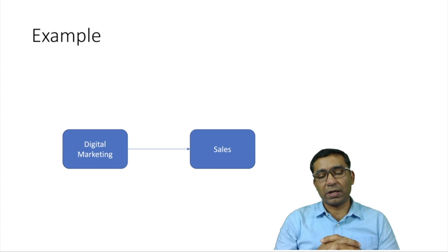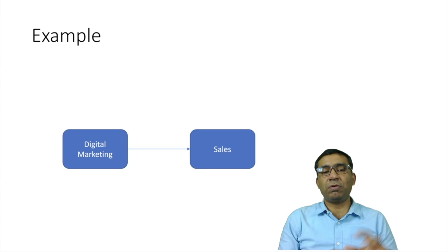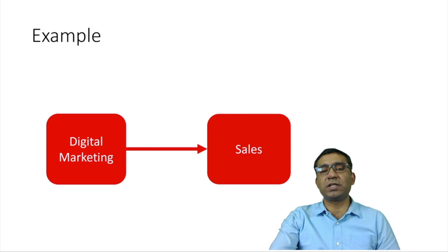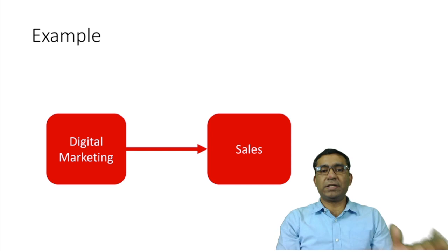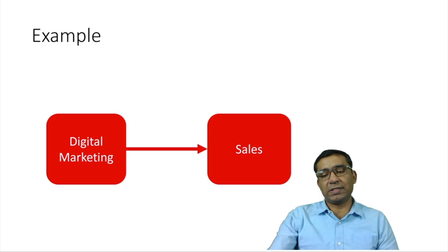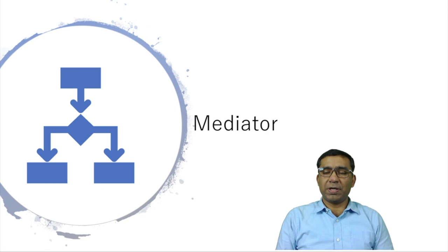For example, digital marketing has an influence on sales — the more we spend on digital marketing, the more the sales would increase. So digital marketing causes a change in sales. This is a causal relationship. Here, digital marketing is the independent variable and sales is the dependent variable.